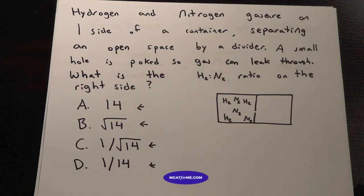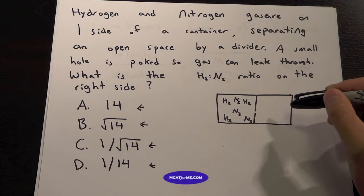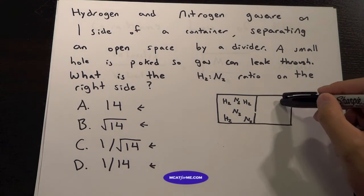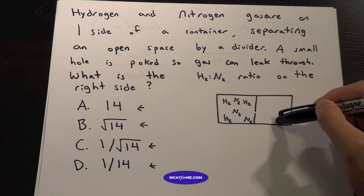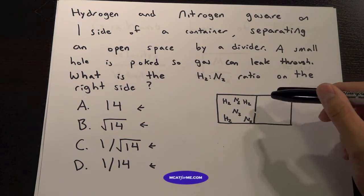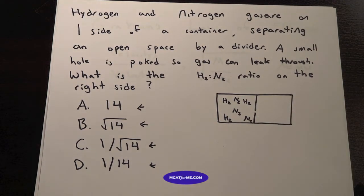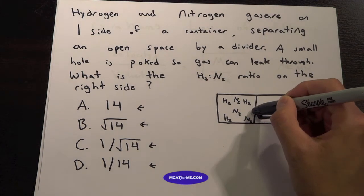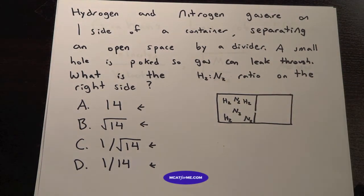The first thing we want to look at to solve this question is what concepts are we using. What this is saying is that over time, once it reaches equilibrium, what will be the ratio of H2 to N2 at one particular time. Because we poked this little hole, a certain amount of gas will be able to travel through based on which one will travel faster.